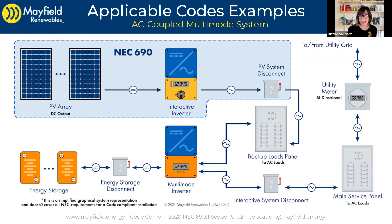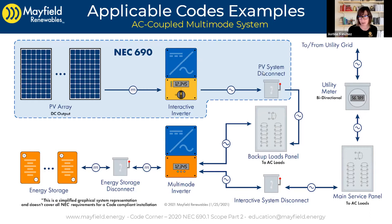Or if you want to utilize a packaged energy storage system — say, maybe the Tesla — where there's an AC output only, you have to AC couple that to a PV system because there is no way to DC couple it. AC coupling essentially means that we are combining our power production sources on the AC side of the bus. The PV system is outputting AC once it goes through the interactive inverter. Our energy storage system, showing batteries with an energy storage disconnect and a multimode inverter, also outputs AC. So we're combining those power sources on the AC side — thus AC coupled.